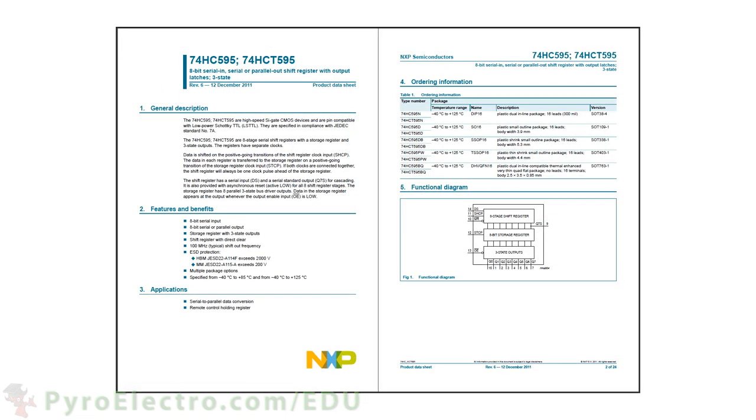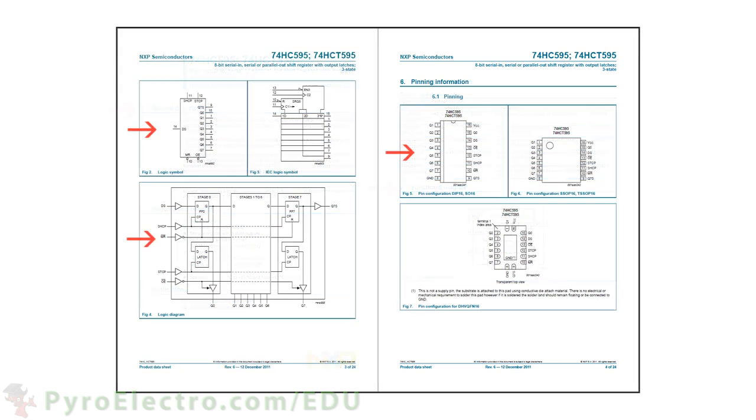The last device we'll look at is the 74HC595, an 8-bit shift register. Here you can see the description and data flow diagram. And on pages 3 and 4, the logic diagram, logic symbol, and part pinouts are present.